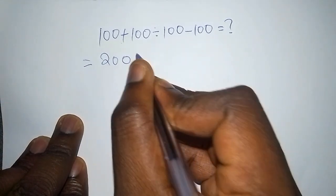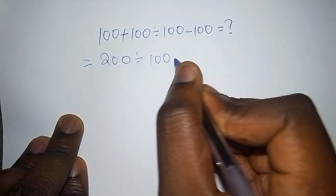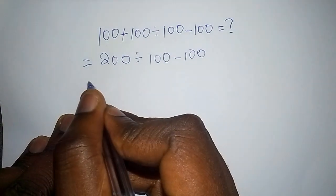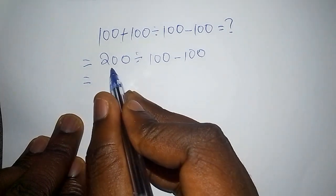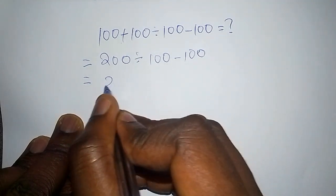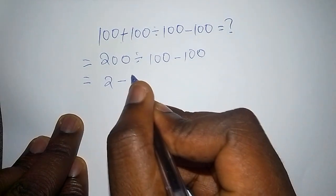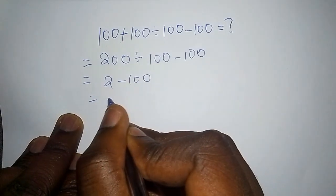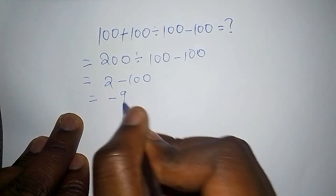Then, 200 divided by 100 subtract from 100. That one was the first step. The second step was that 200 divided by 100 is 2, then 2 subtract from 100. So, when you take 2 minus 100, the answer shall be minus 98.